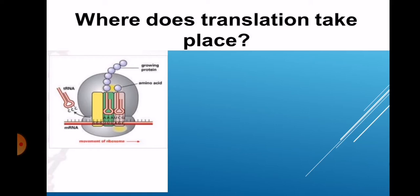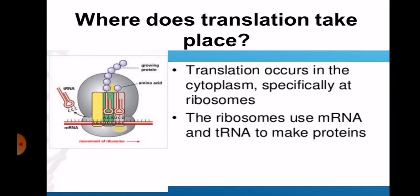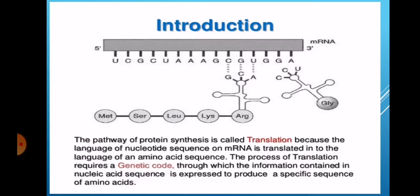Where does translation take place? Translation occurs in the cytoplasm especially at ribosomes. The ribosomes use messenger RNA and tRNA to make proteins. The pathway of protein synthesis is called translation because the language of nucleotide sequence on mRNA is translated into the language of an amino acid sequence. The process of translation requires a genetic code through which the information contained in nucleic acid sequence is expressed to produce a specific sequence of amino acids.